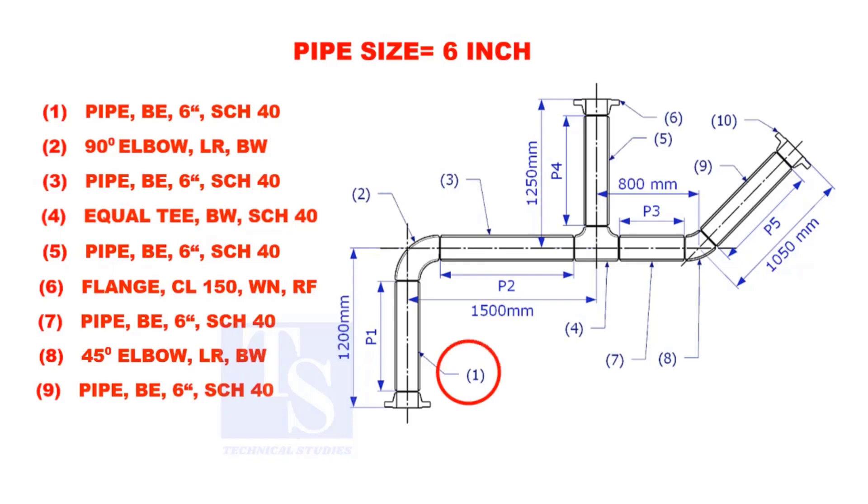Let us calculate the length of pipe 1. To calculate the length of pipe 1, we need to reduce the flange height and the elbow center from the measurement 1200mm.